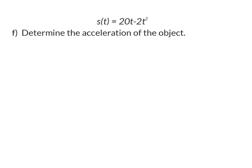Question F: Determine the acceleration of the object. We know that acceleration is the rate of change of the velocity, so we take the first derivative — which is the velocity — and find its derivative, giving us the second derivative. This derivative is minus 4, and the unit is meters per second squared.